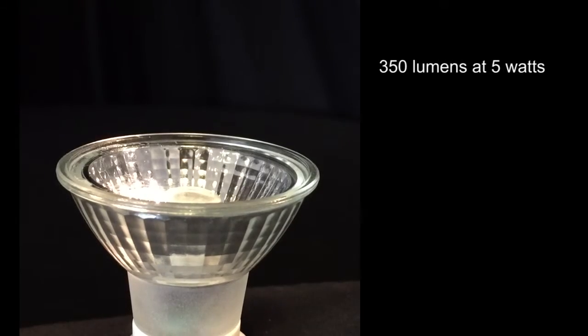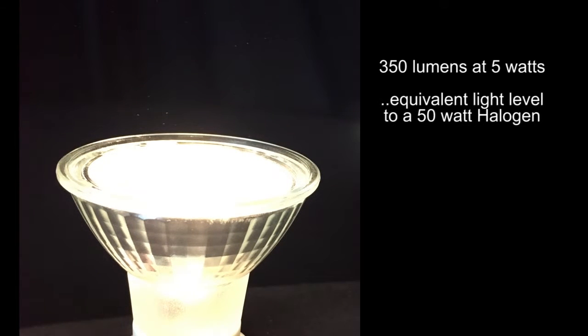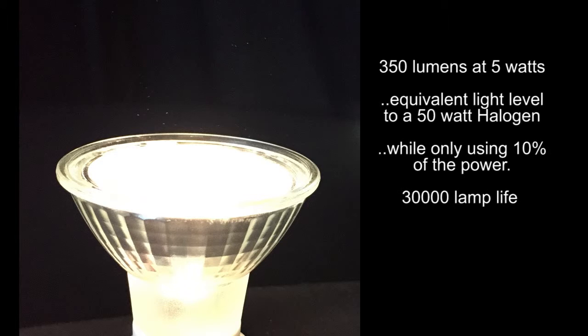Producing 350 lumens at 5 watts, the ProHalo emits an equivalent light level to a 50 watt halogen GU10, whilst using only 10% of the power. This along with a 30,000 hour lamp life make for huge savings over the life of the lamp.